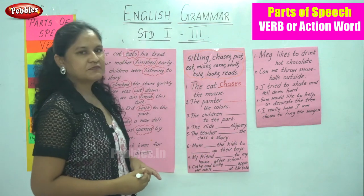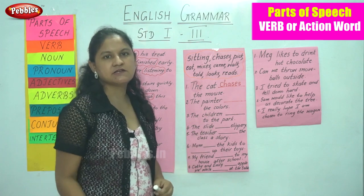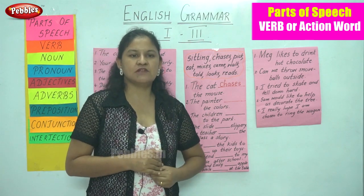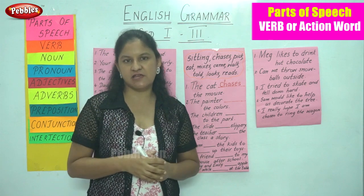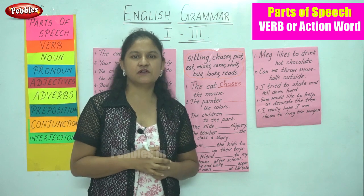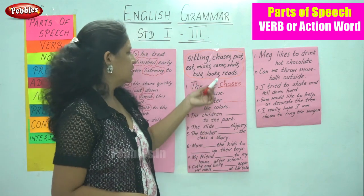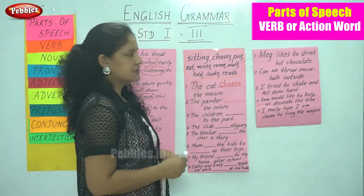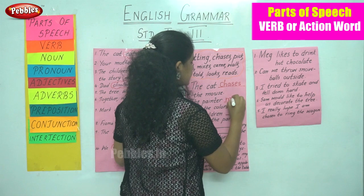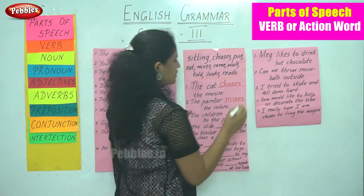Next sentence: 'The painter ___ the colors.' Normally a painter, before he starts painting, mixes different colors together — that is the action done by a painter. We find the word mixes, so: 'The painter mixes the colors.' This becomes the verb or action word.